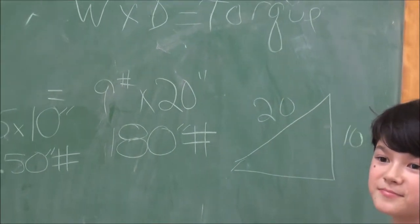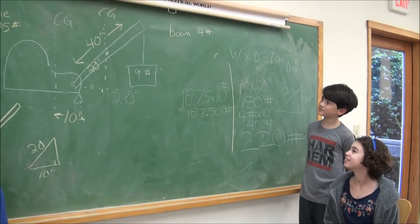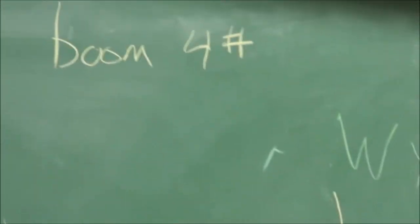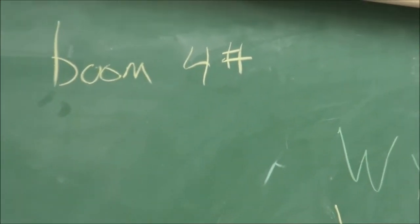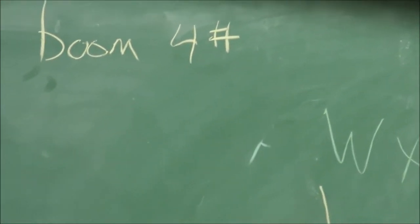We got 180 inch pounds on one side. Now, we forgot to include the boom. The boom weighs 4 pounds. So that's the weight. How do we figure out the distance?